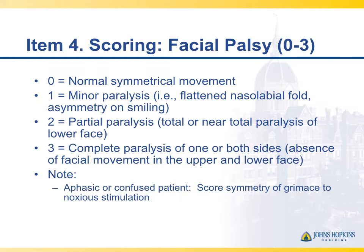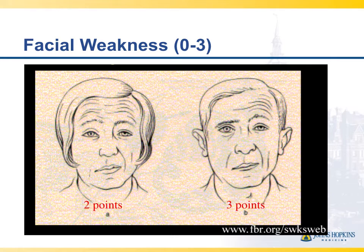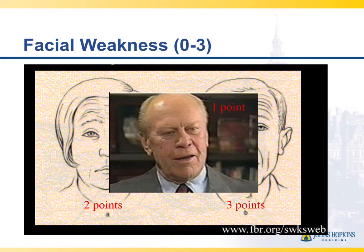Item number four is facial palsy, also scored on a scale of zero to three. Ask the patient to smile, but if they're aphasic or confused, you can use symmetry of grimace to stimulation. Zero is normal, and three is a lower motor neuron palsy involving both upper and lower face. Differentiating a one from a two can be difficult — both involve the lower face. I like to use the grandmother test: if your grandma can tell there's a droop, it's likely major and a two; if not, it's minor and a one.